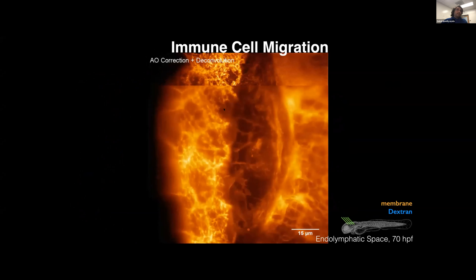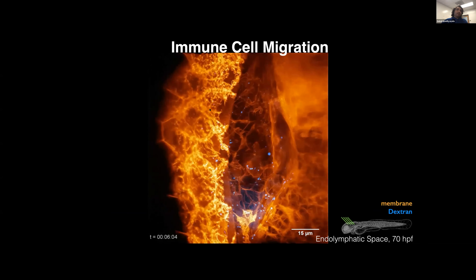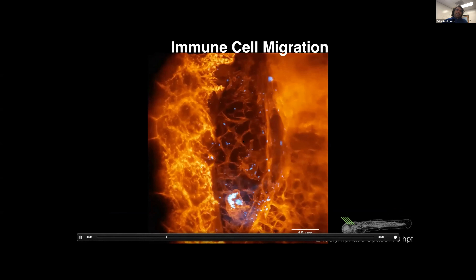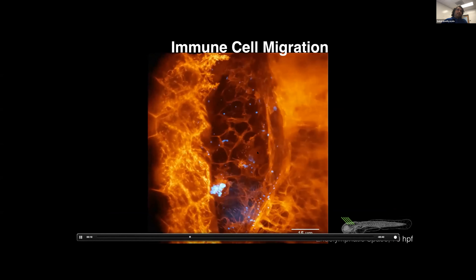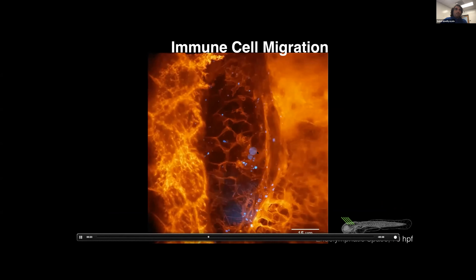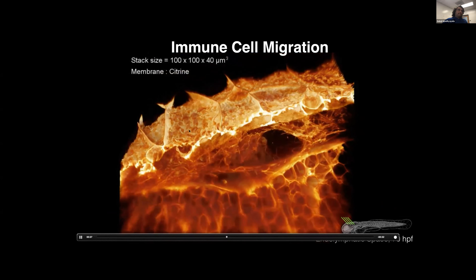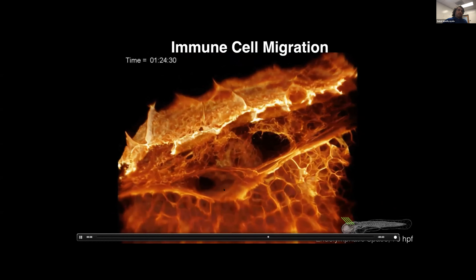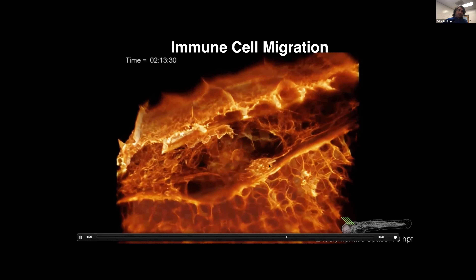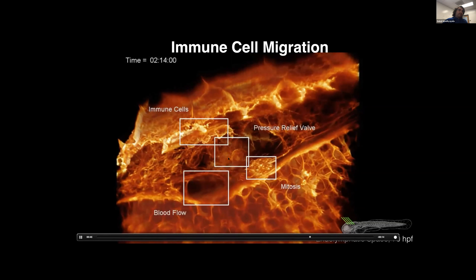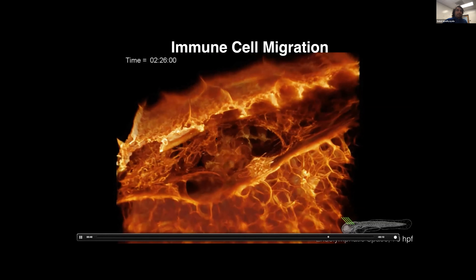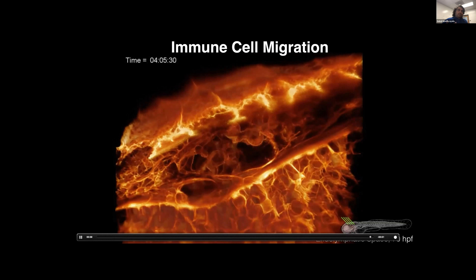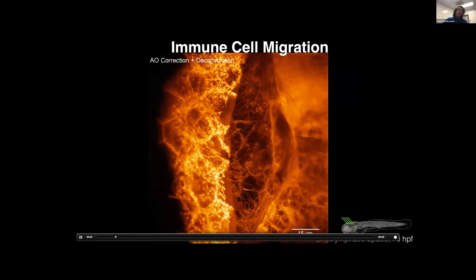In one field of view imaging the ear region of the zebrafish, we studied the endolymphatic duct and sac regulating pressure as the ear develops. The immense diversity of biology visible in this single volume is striking: ruffling skin cells, the hindbrain, a blood vessel with red blood cells zipping through, endothelial cells, cells in anaphase, immune cells crawling around and sensing their environment — eleven distinct cell types captured in one region of interest.